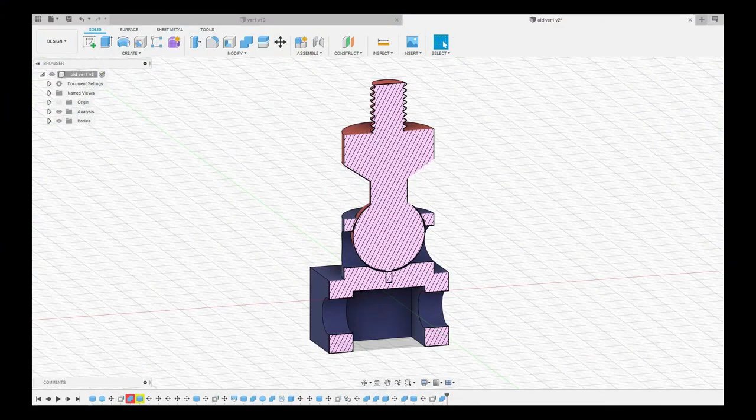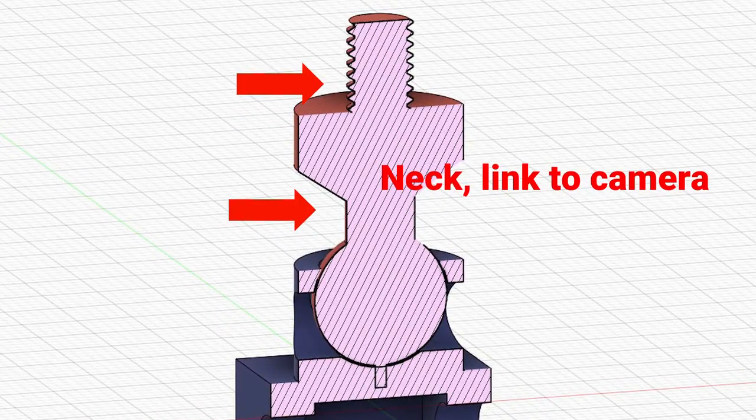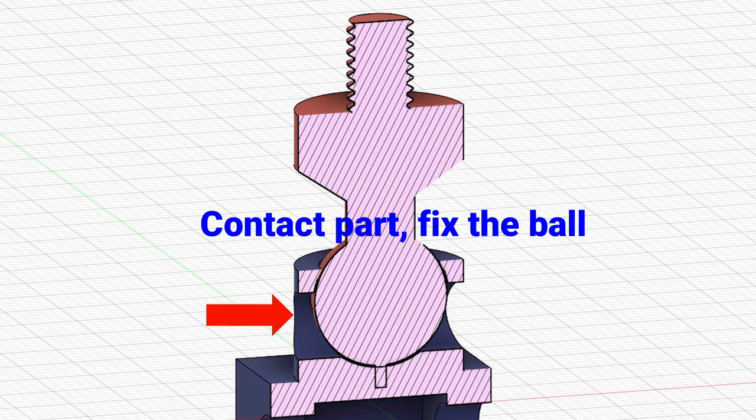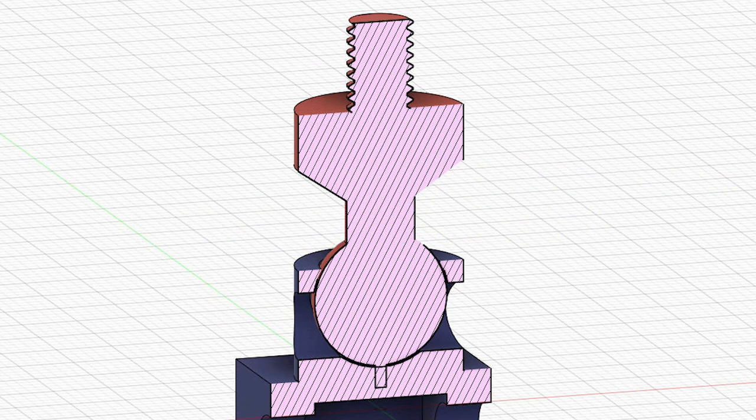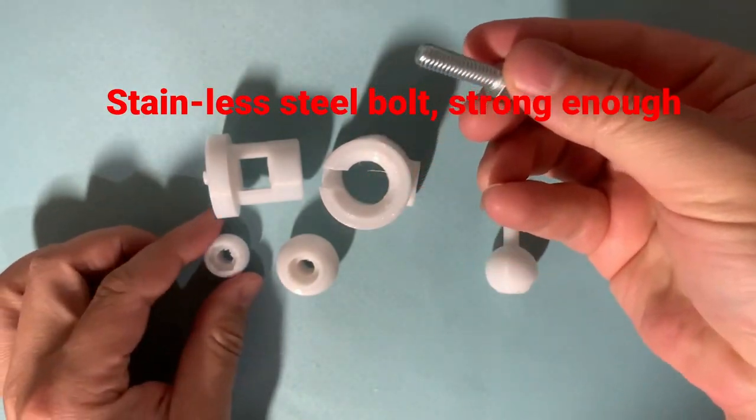Okay, I knew where the important points are to take care of. One is the neck linked to the camera. Another is the contact part related with the rotation ball.